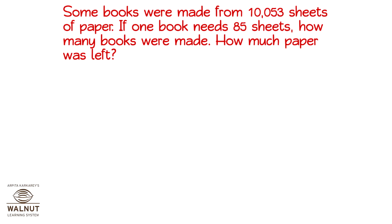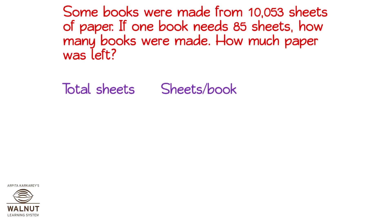We know the total number of sheets. We know how many sheets are in one book. We have to find how many books there are in total. We have to divide — we divide the total sheets by the sheets per book, and that gives us the total books.